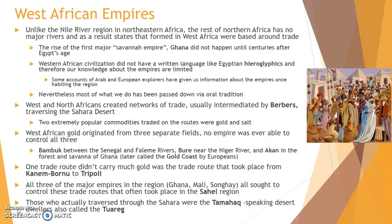The third gold field was Akan, in the forest and savannah of present-day Ghana, which led Europeans to call the adjacent coastline the Gold Coast. It must be noted that the eastern region of West Africa had a trade route north from Kanem-Bornu to Tripoli that involved no significant amount of gold. Instead, caravan merchants traded in slaves, salt, and weapons.